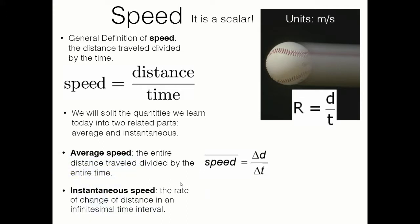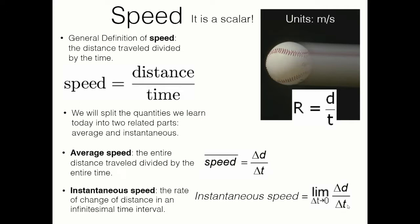Instantaneous speed is different. Instantaneous means the rate of change of distance in an infinitesimal time interval. So when we look at instantaneous speed, we have to take a limit — an operation that says you allow a change in a variable to approach zero. We're going to allow delta t to approach zero in the expression for average speed. What that means is we look at a very small instant in time and see how the distance changed over that instant. Both the numerator and denominator get really small, but they usually approach some finite positive value.